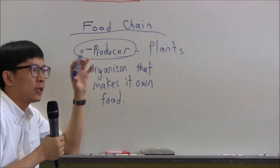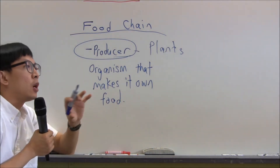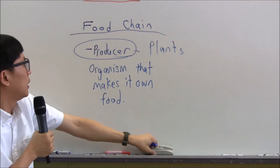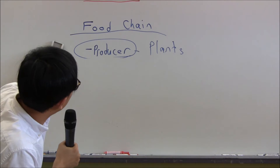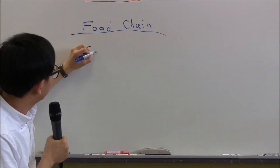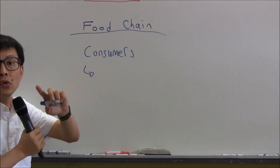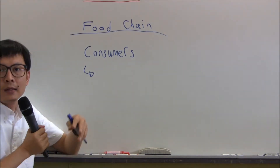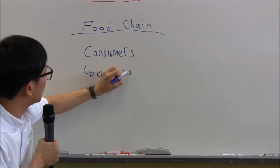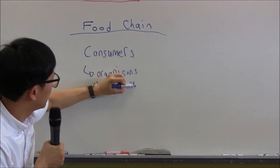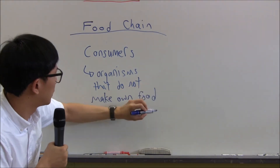In a food chain, most food chains start off with plants — plants are the producers. Any other organism that does not make its own food becomes a consumer. Organisms that do not make their own food — like humans, ducks, lions, giraffes, fungi — they are all called consumers.